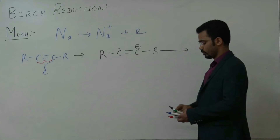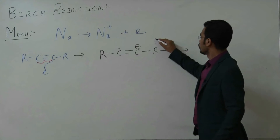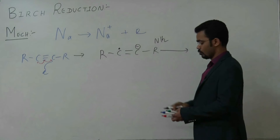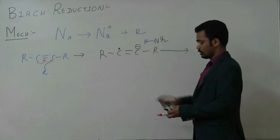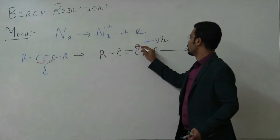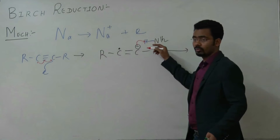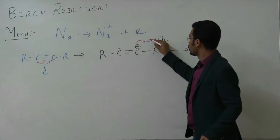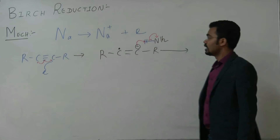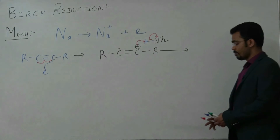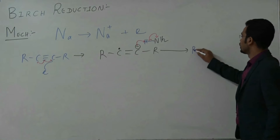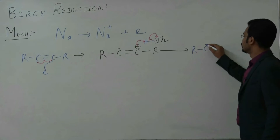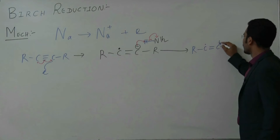You have ammonia — NH3. So the radical anion will take H from NH3. This electron will take the H, and the bonded electron will shift towards nitrogen. So overall, the compound that will form is R-CH=C• (vinyl radical with R group).